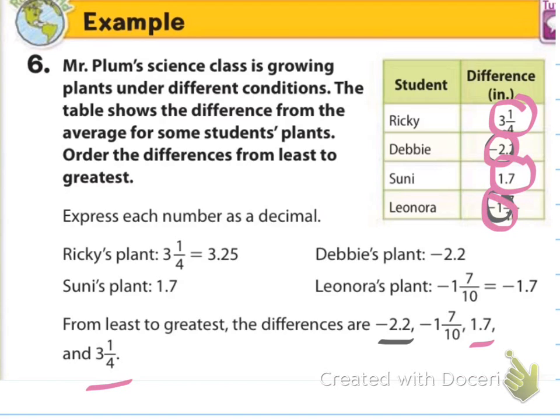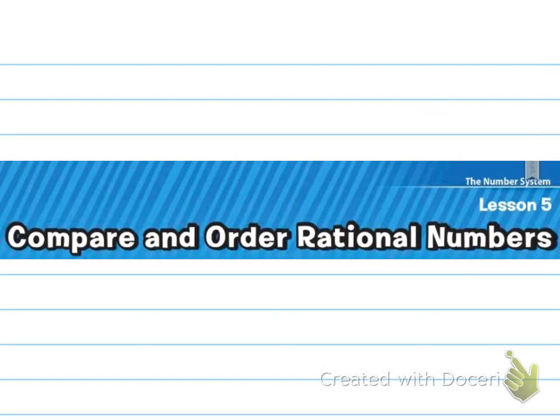That one's kind of easy, because we can just look at those whole numbers. In negatives, we put the negatives together and then positives together and put them in order from least to greatest. So that ends our 5.5 lesson on comparing and ordering rational numbers. I hope you enjoyed the video. I'll see you in school.